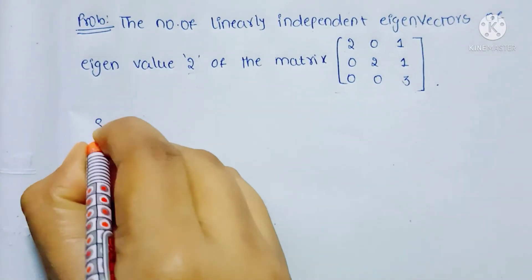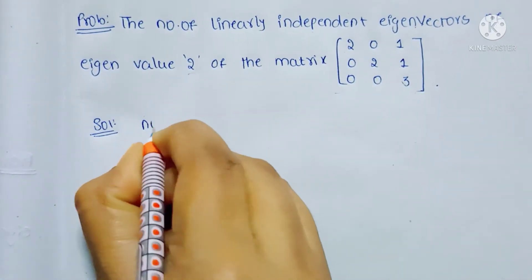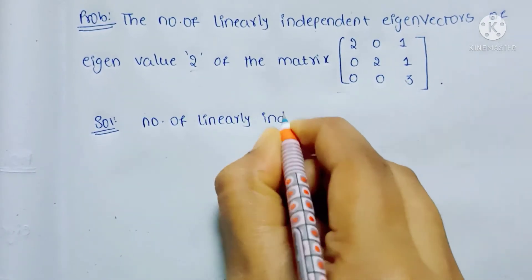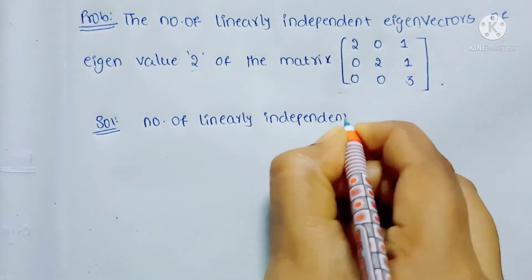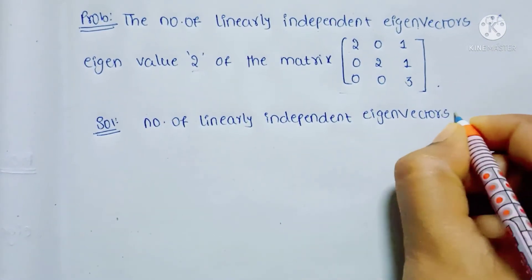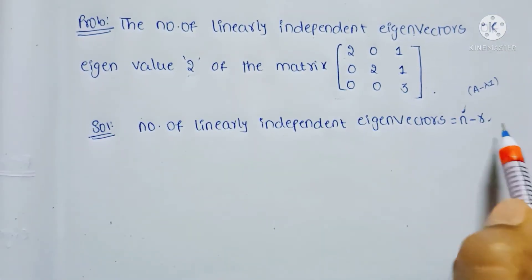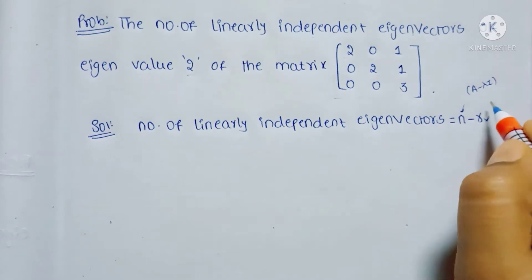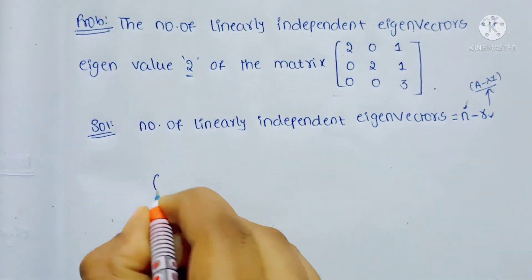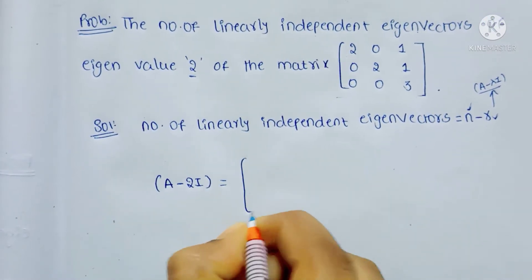We know that the number of linearly independent eigenvectors equals N minus R, where N is the order of the matrix and R is the rank of the matrix (A minus λI). Here λ = 2, so we compute A minus 2I.